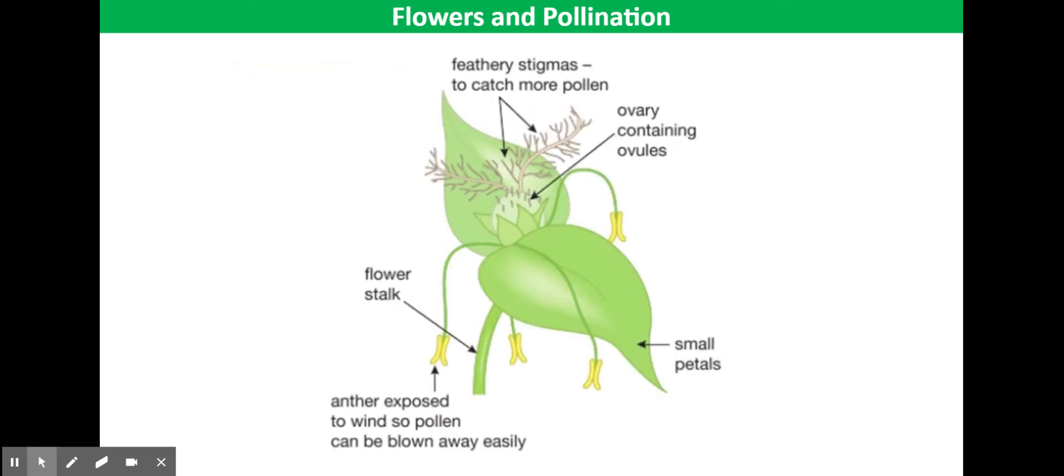In wind pollinated flowers, so those are flowers that distribute their pollen via the wind, the petals are small and dull. They're often green or brown colored as they don't need to attract insects.